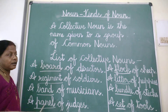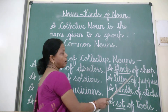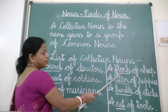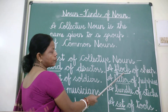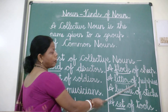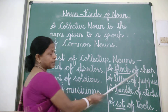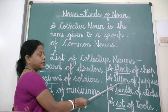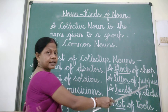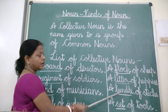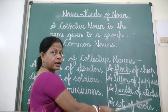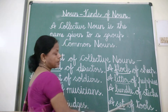A flock of sheep — here 'flock' is a collective noun, used for a group of sheep. A litter of puppies — a group of puppies is known as a litter. A bundle of sticks — a collection of sticks is known as a bundle. A set of tools — a collection of tools is known as a set.